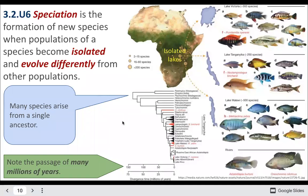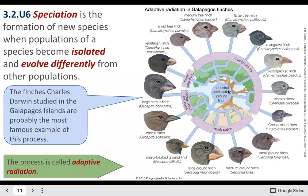Speciation is the actual formation of new species when populations become isolated and then evolve differently. A really cool example is in Africa with its different lakes. These lakes would fluctuate in water level — as they rise, everything's connected; as they drop, fish become isolated. When those fish are isolated, they are able to diverge genetically, and once they rejoin, they might have become a different species.